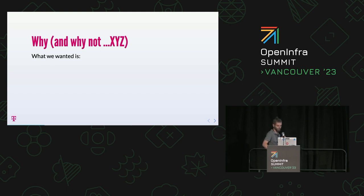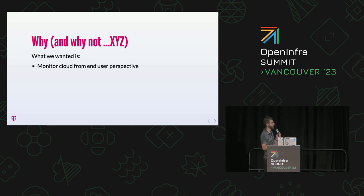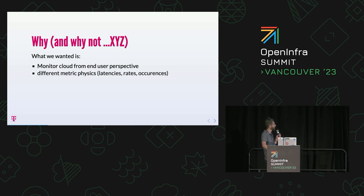Why and why not? What we wanted initially is to monitor a cloud from the end user perspective. The question here is not to know what is on the backend side - to know that Nova is running and that there is disk space - but we really wanted to know what if end users start using our cloud and how it will feel for them. We wanted to have different physics of the metrics: latencies, rates, occurrence rates, failure rates, success rates.